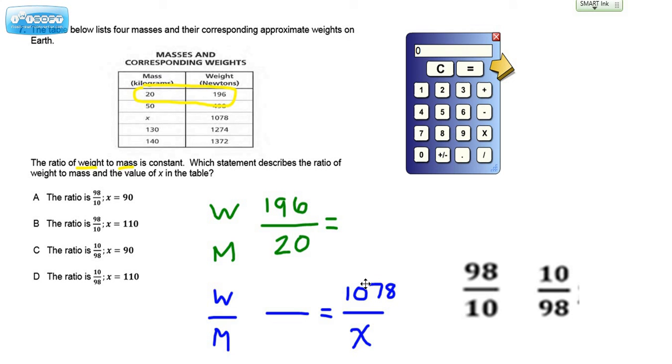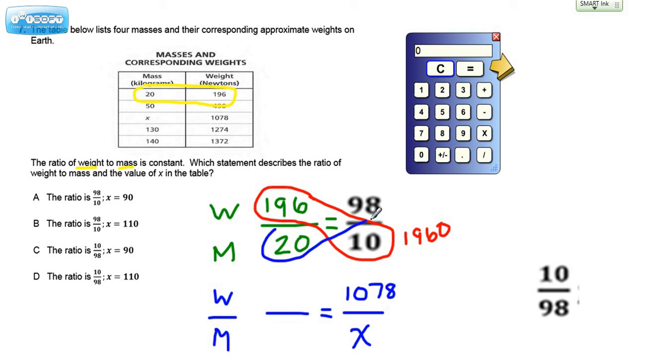So let's say we're going to explore the 98 to 10 ratio first. One way we can do this is to just simply check the cross products and see if they're equal. If we do the cross products, we would do this times this, which we should be able to do that in our head. It's 196 with a zero after it. And then if we do the other cross product of 20 times 98, let's see if we get this.